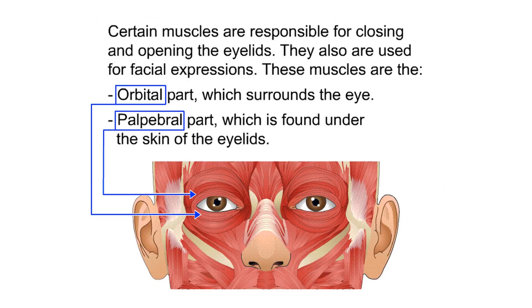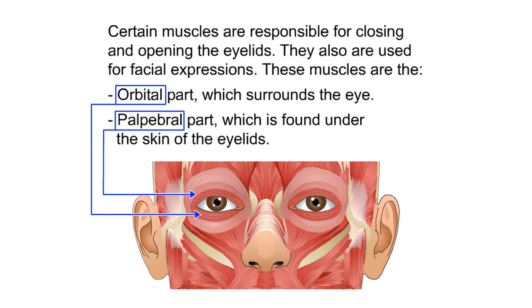Closing your eyelids when something is coming towards your eyes can protect them from injuries. Certain muscles are responsible for closing and opening the eyelids and are also used for facial expressions. These muscles include the orbital part, which surrounds the eye, and the palpebral part, which is found under the skin of the eyelids.